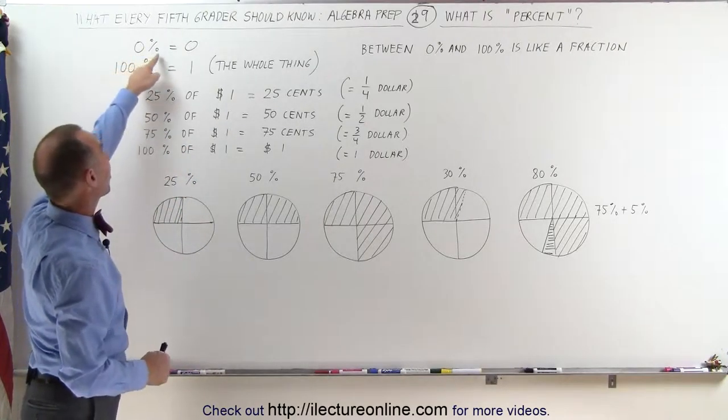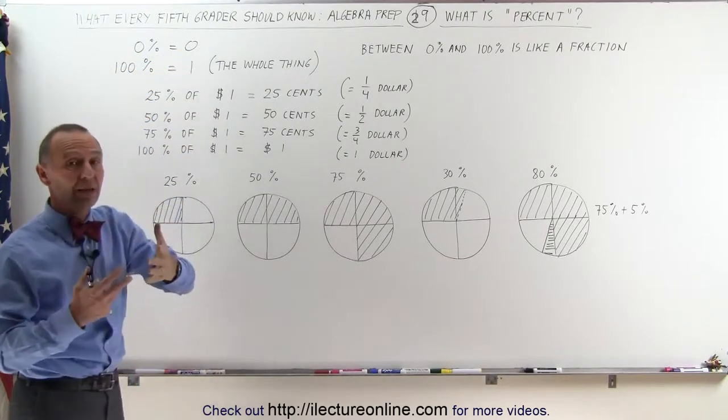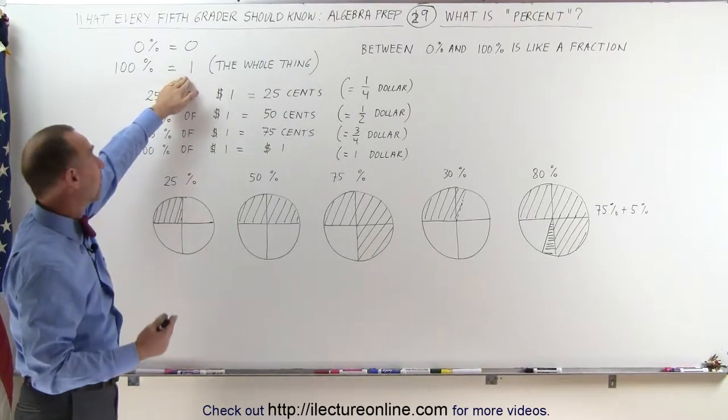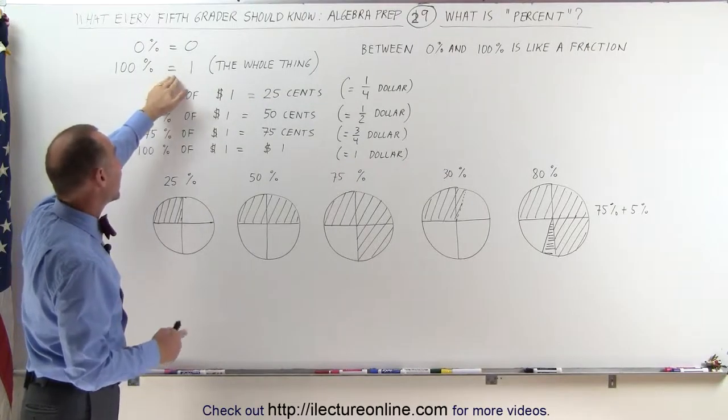If we say we have 0% of something, we mean we have nothing of it. If we say that we have 100% of something, it means we have the whole thing. 100% is the same thing as 1.